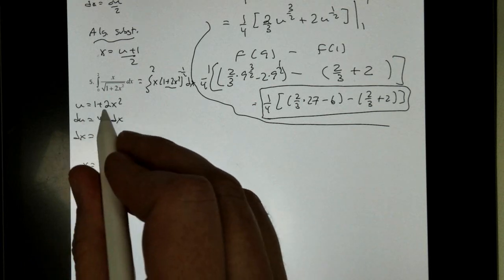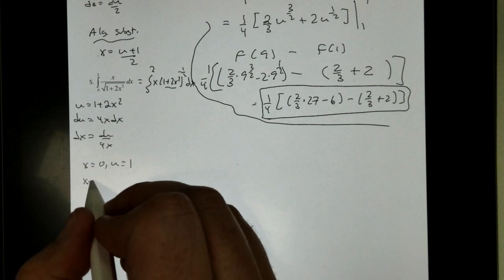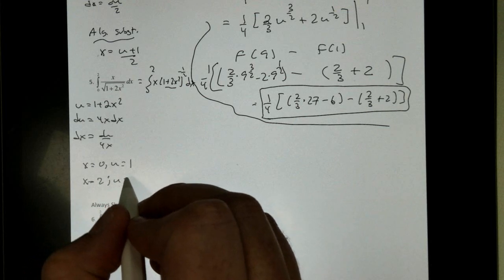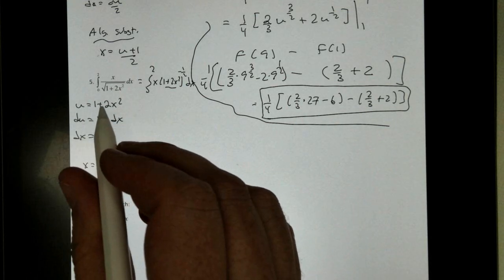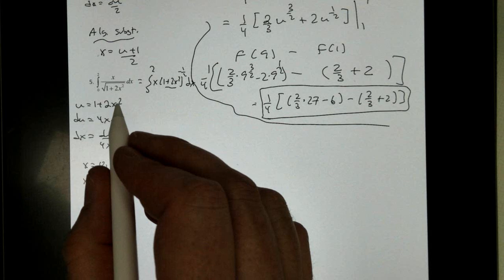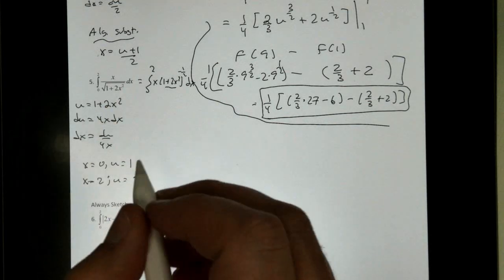So, we can do this one. Our u is 1 plus 2x squared. Our derivative is 4x dx, giving us dx is du over 4x. I am going to change my domain right away. When x is 0, u is 1, and when x is 2, u is 1 plus 4, 8, 9. There we go.